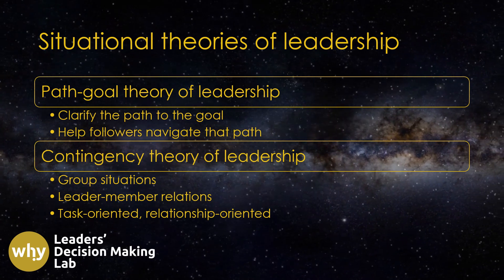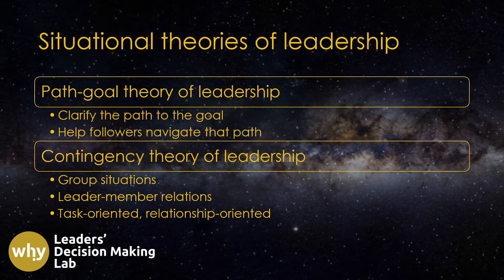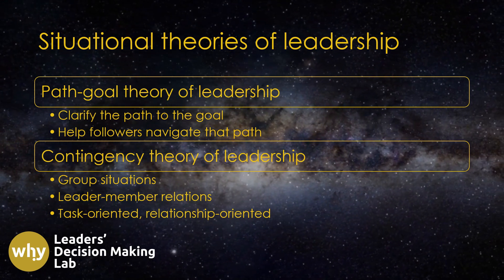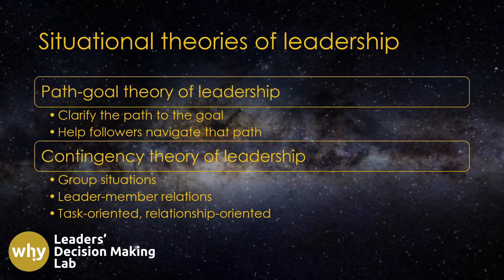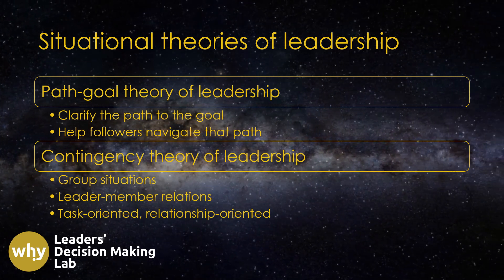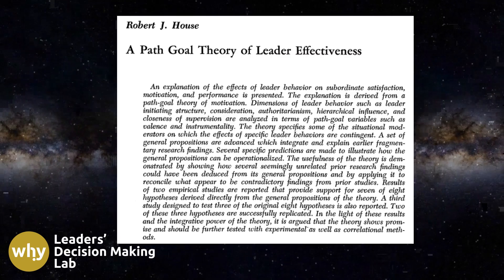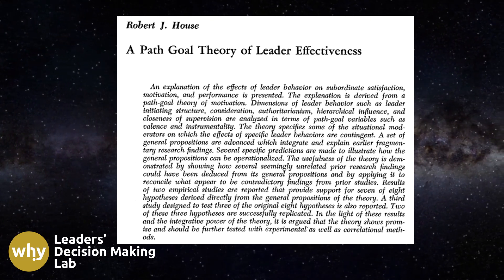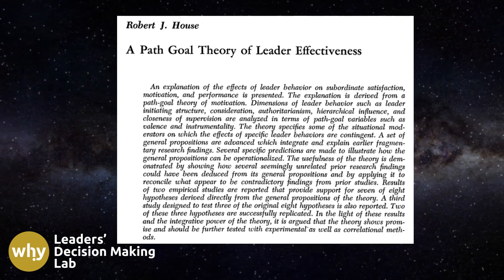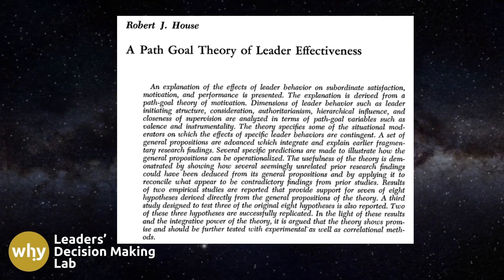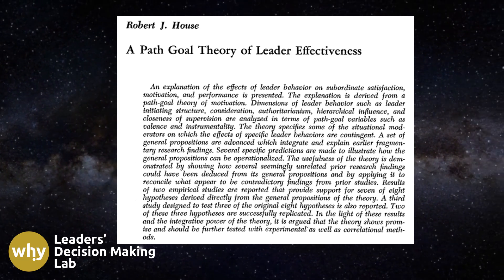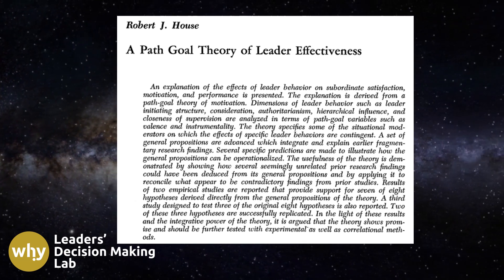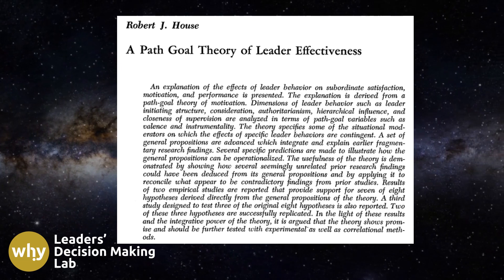In contrast, Path-Goal Theory emphasizes that effective leadership is about clarifying the path to the goal and that the leader's role is to help followers navigate that path. As one of several situational leadership theories, Path-Goal Theory has emerged as a dominant and enduring theory within the field of management, maintaining its relevance for over four decades since Robert House first introduced it in 1971.